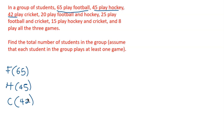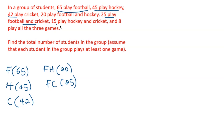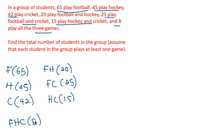The question continues: 20 play football and hockey, so F∩H = 20. 25 play football and cricket, so F∩C = 25. 15 play hockey and cricket, so H∩C = 15. And lastly, 8 play all three games — football, hockey, and cricket.